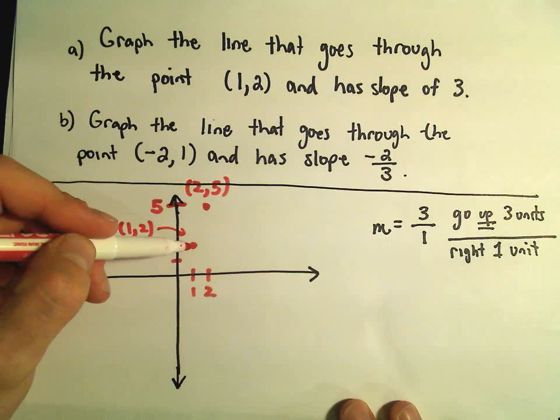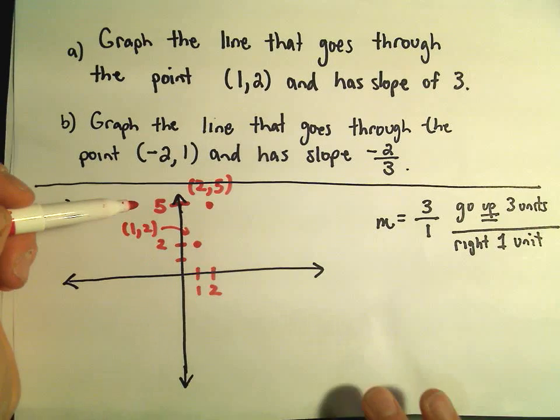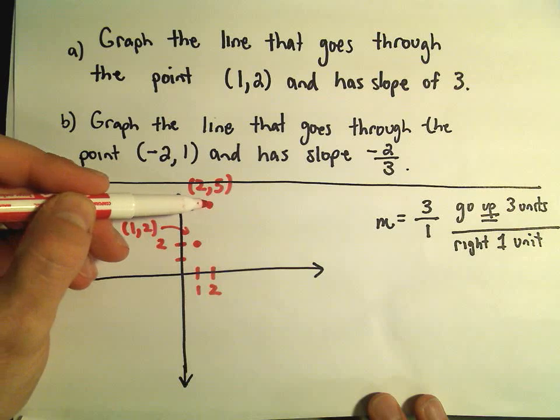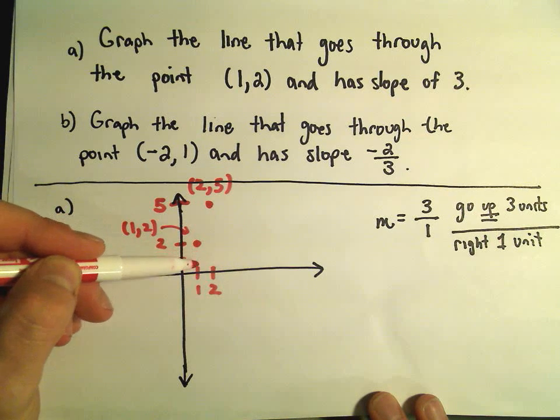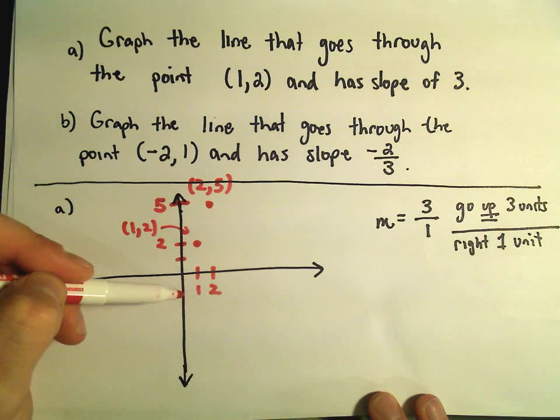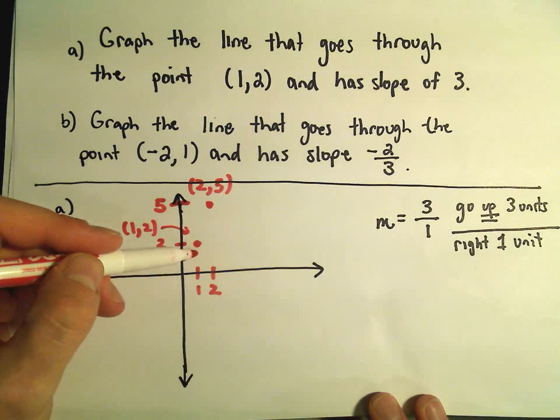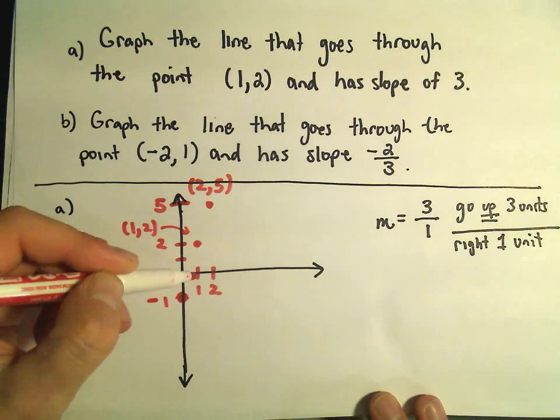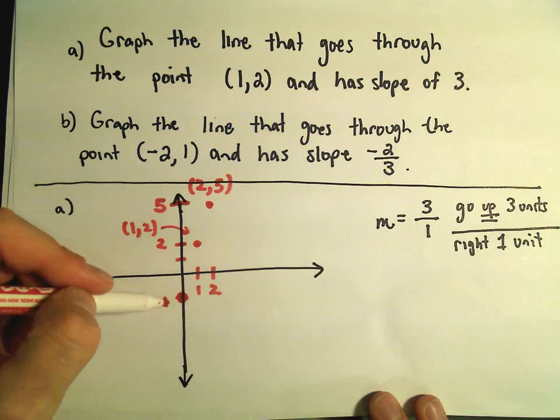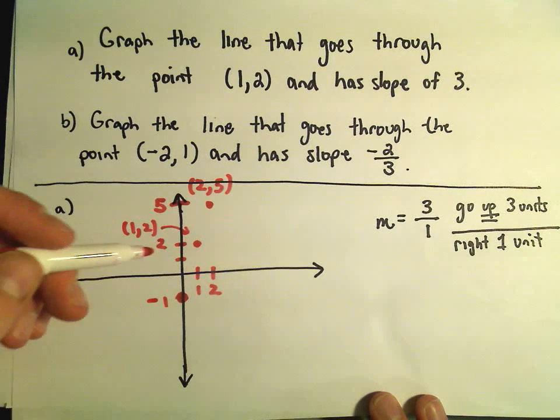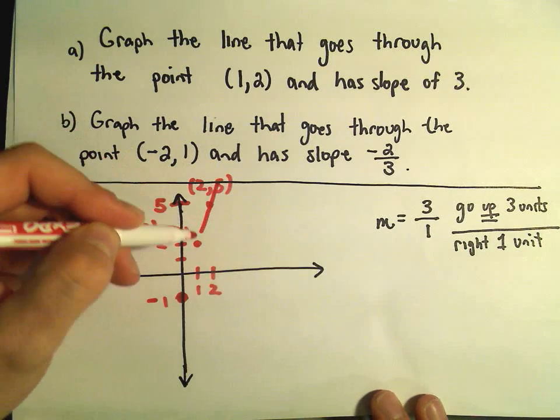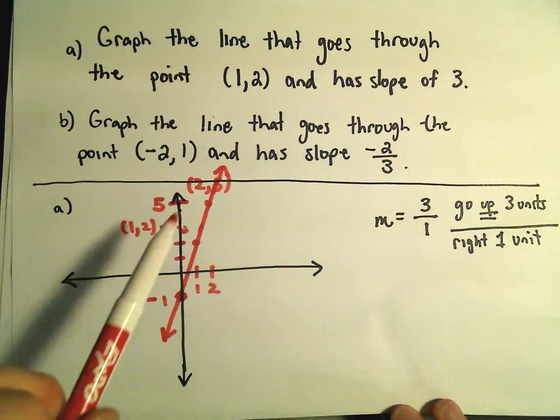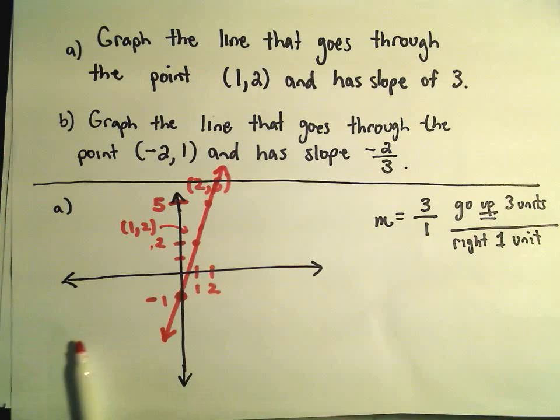I don't believe this is going to go through the origin. But notice if you go up 3, you go right 1. Equivalently, we could say if you go down 3 units, you go left 1 unit. So if I go down 3 units, I would actually be down at negative 1. And then to the left would put me at the y coordinate of negative 1 and the x coordinate of 0. And then now we've got our line. It has a positive slope, so I know it has to be moving upwards as we go left to right.